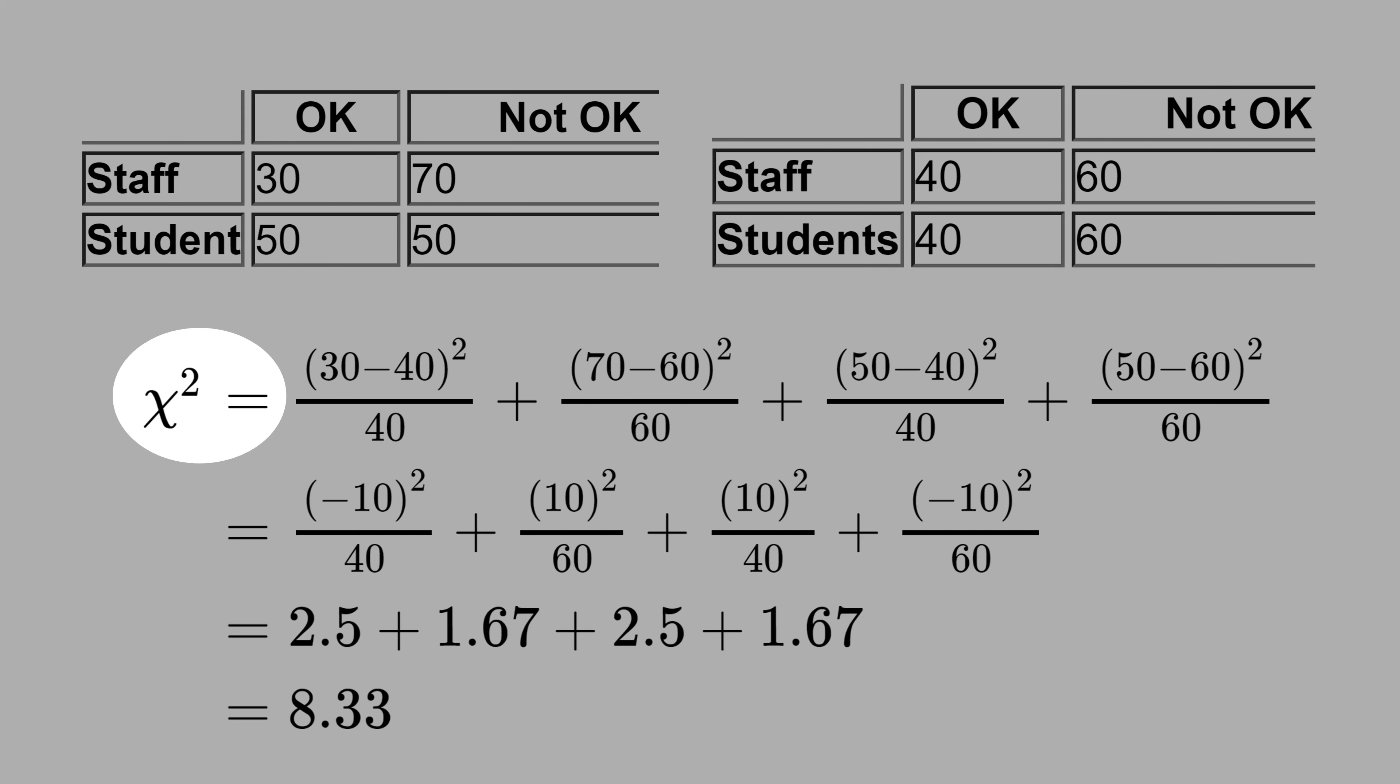Let's learn how to calculate the chi-square. This is our data. We have a variable here, type of people, staff or student, and here if they are OK or not OK to use drugs.